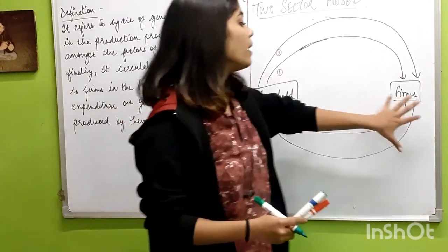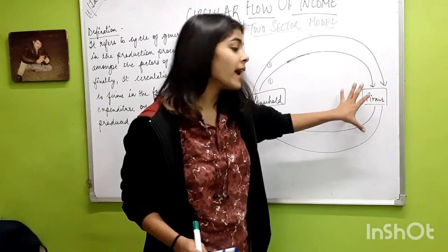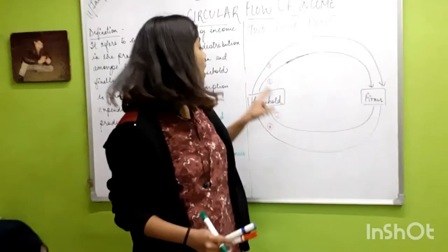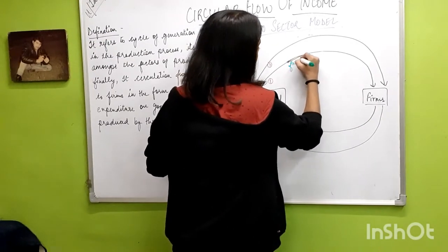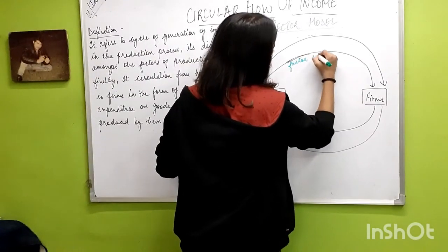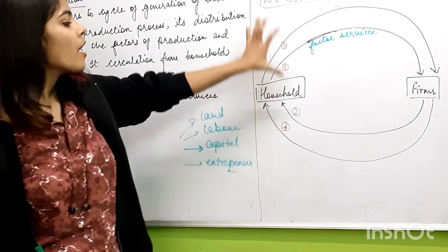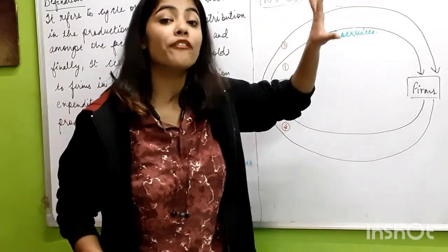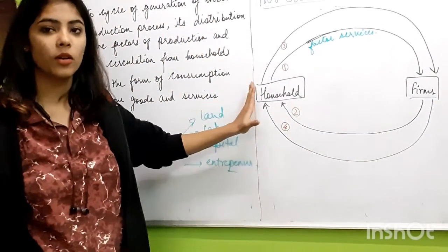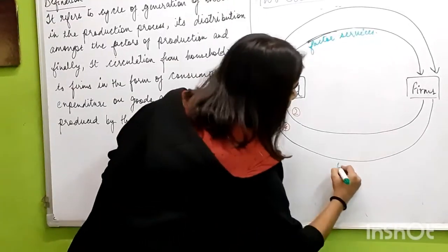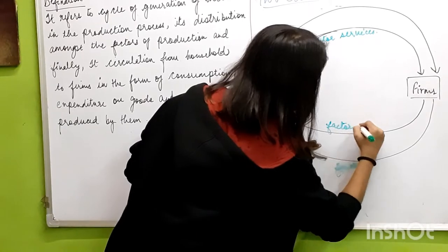The factors of production — where does the firm get them from? From households. So what the firm gets is factor services. When the household provides factor services to the firm, the firm in return provides factor payments to the household.